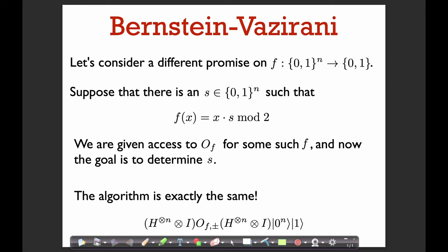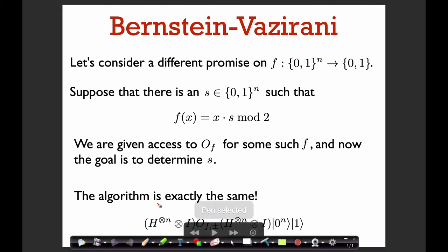Now let's discuss the Bernstein-Vazirani algorithm. The setup is the same: we have oracle access to a function f, and we again have some promise that f satisfies a certain property. In this case, the property is that we are guaranteed that there's an n-bit string s, such that f of x is equal to the dot product of x with s modulo 2. That's the promise. So for such an f, we're given access to an oracle for f, and our problem is to determine what s is.